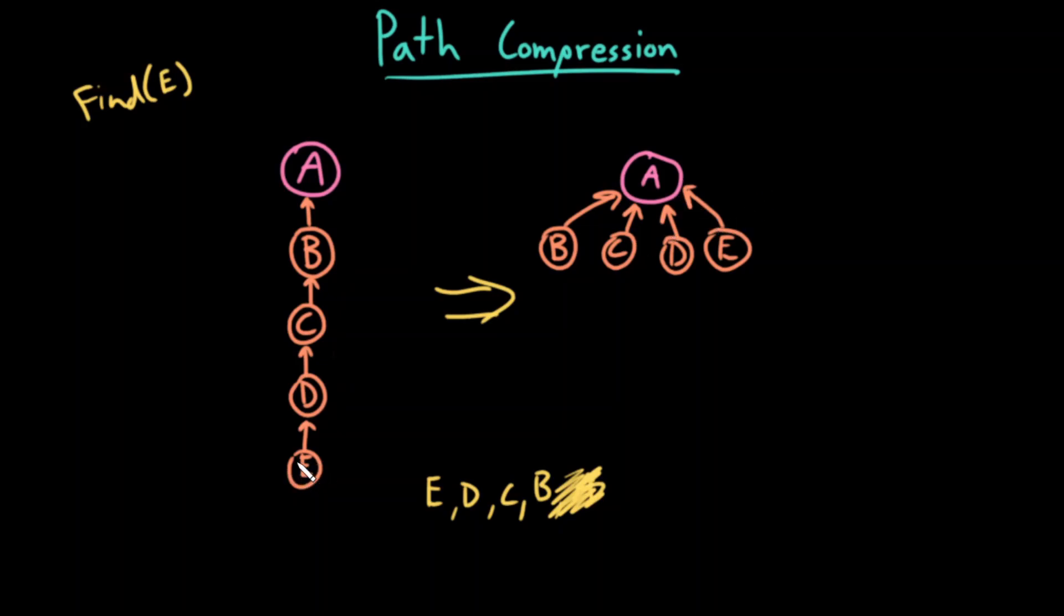Now, if I call find on E first, I will still have to traverse those four parent pointers. But then the next time when I call find on D, I can access A in constant time. I just traverse one parent pointer. So this helps us shrink the height of the tree, especially in trees that have frequent find operations called upon them.